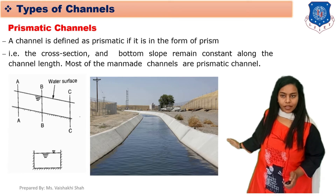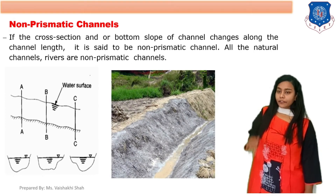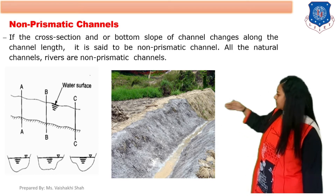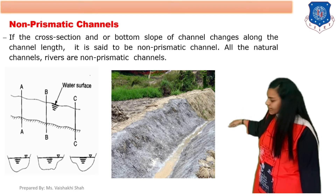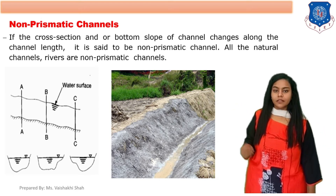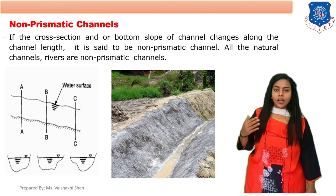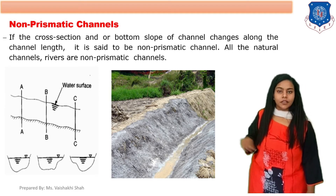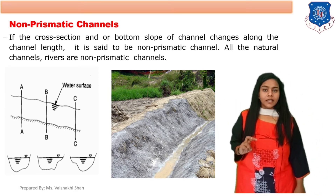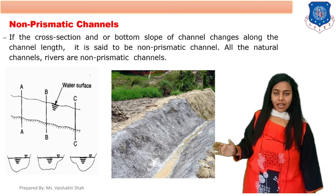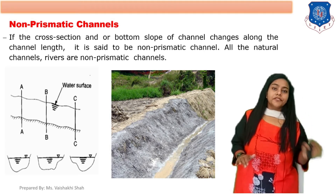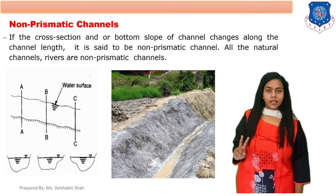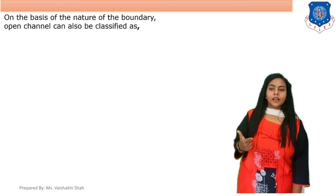The second type is non-prismatic channel. If the cross-section and bottom slope of the channel change along the length of the channel, then it is called a non-prismatic channel. All natural channels or rivers are non-prismatic channels, where the slope is not properly identifiable and there are uneven slopes. So clearly, all man-made or artificial channels are prismatic, and all natural channels or rivers are non-prismatic.